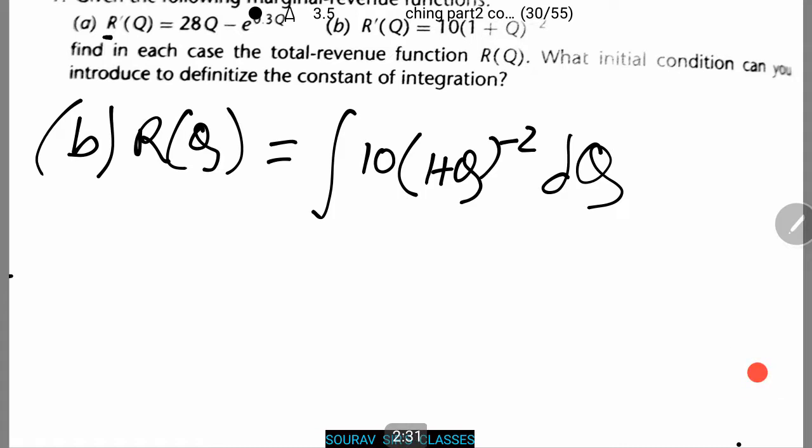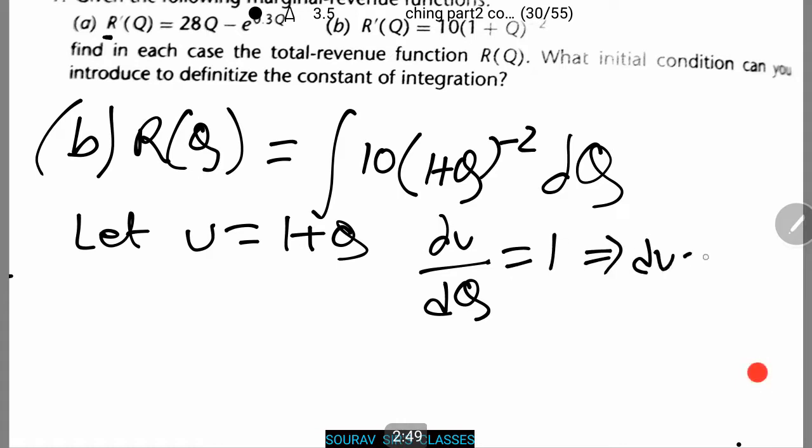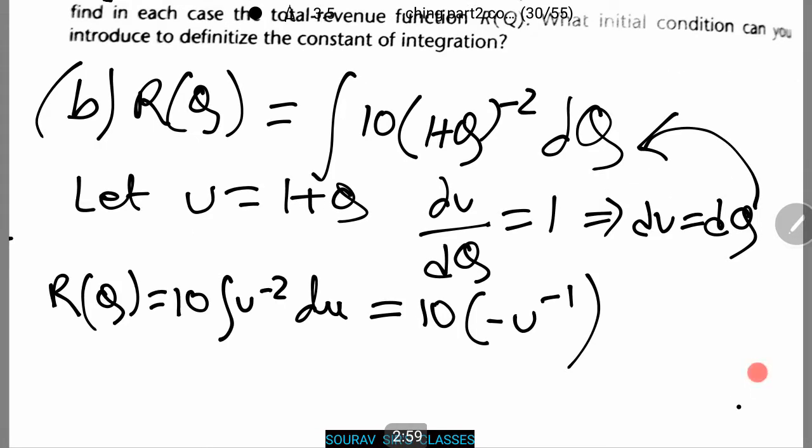1 plus Q. But before proceeding further, let u equals 1 plus Q. Therefore du by dQ equals 1 or du equals dQ. Now putting this into our original equation we find that R(Q) equals 10 integration u to power minus 2 du equals 10 into minus u to power minus 1 plus C. Now putting in the original values minus 10 into (1 + Q) to the power minus 1 plus C. This is our obtained equation.